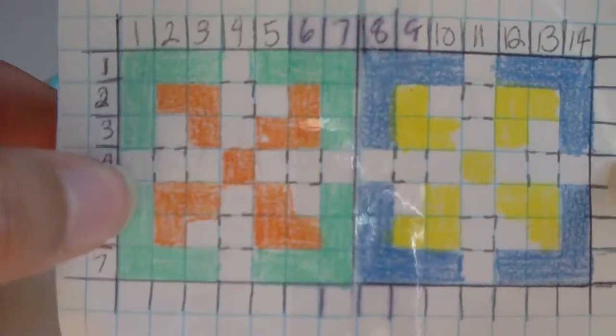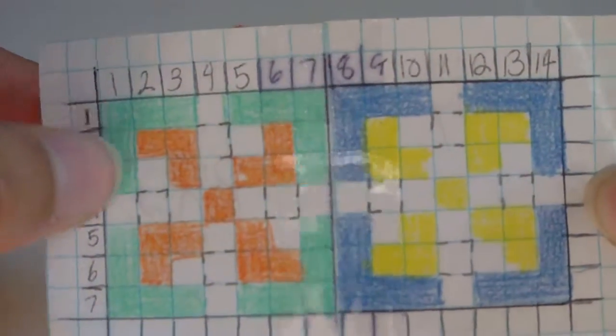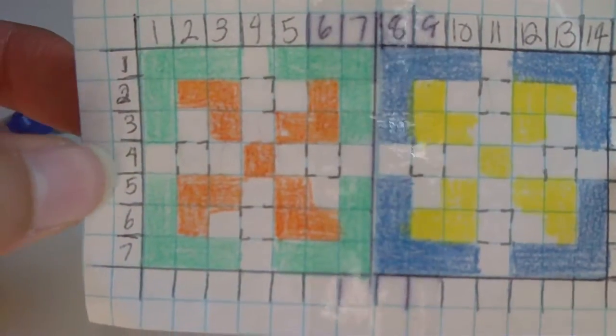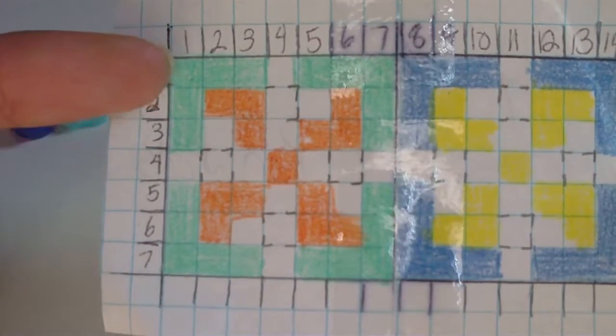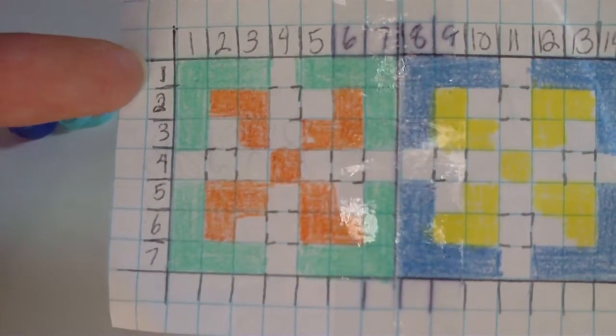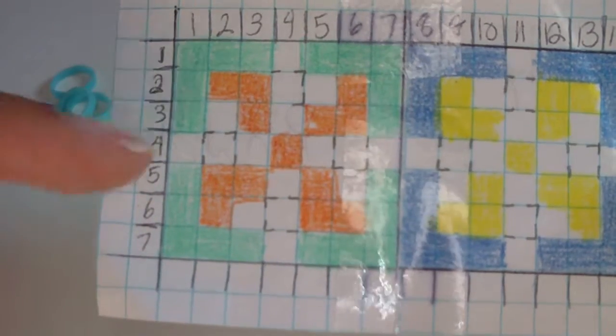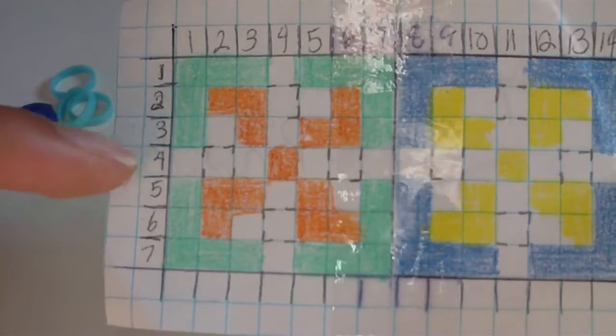So you would need a turquoise rubber band here in row one, another one in row two, and then down here in row four where it's the only one that's different, you need a white band in row four or whatever color you wish to use in place of the colors on the template.